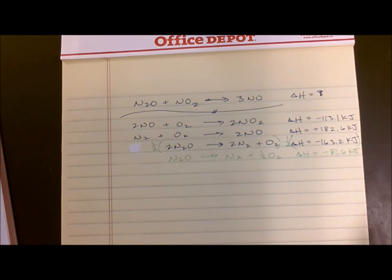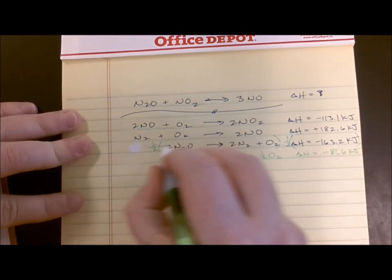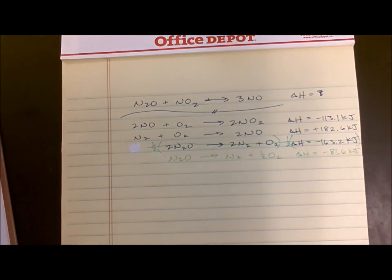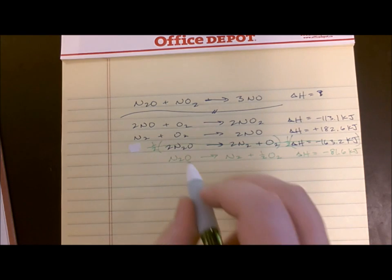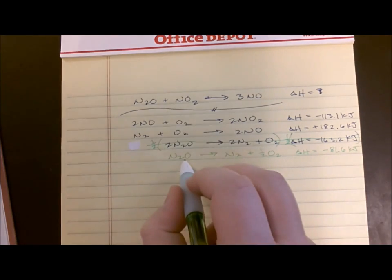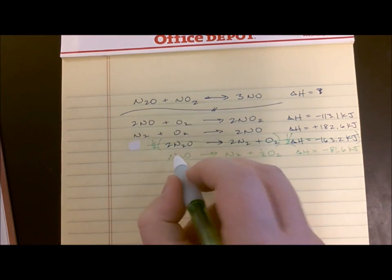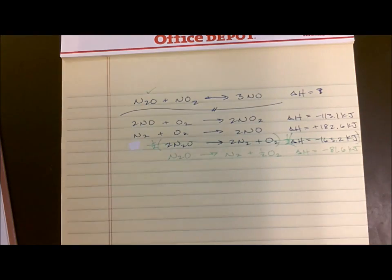Now here's the part that's really important. I am going to put a line through what I just did to cross it out and make sure that I understand that that cannot be used later on. I've got an N2O, it's on the proper side, it has the proper number in front of it. I win. I found that one.